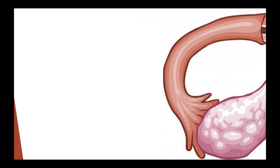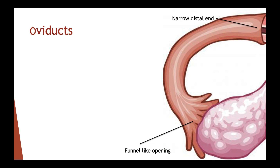The oviducts or fallopian tubes extend from the uterus and form a funnel-like opening at each ovary. The distal end is very narrow. After ovulation, the cilia present on the inner epithelial lining of the oviduct help collect the egg and propel it towards the uterus by wave-like contractions.